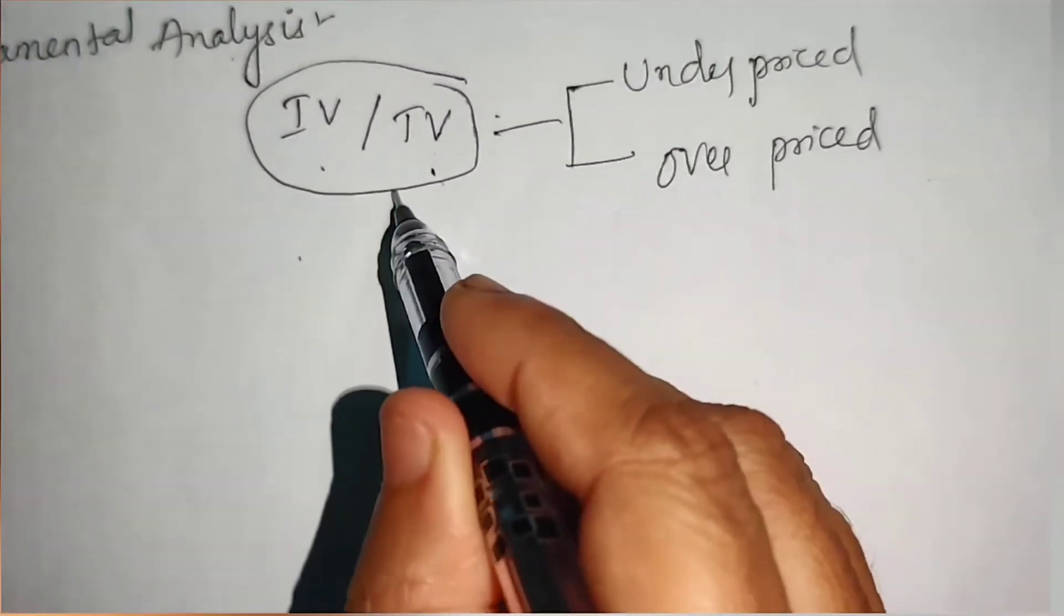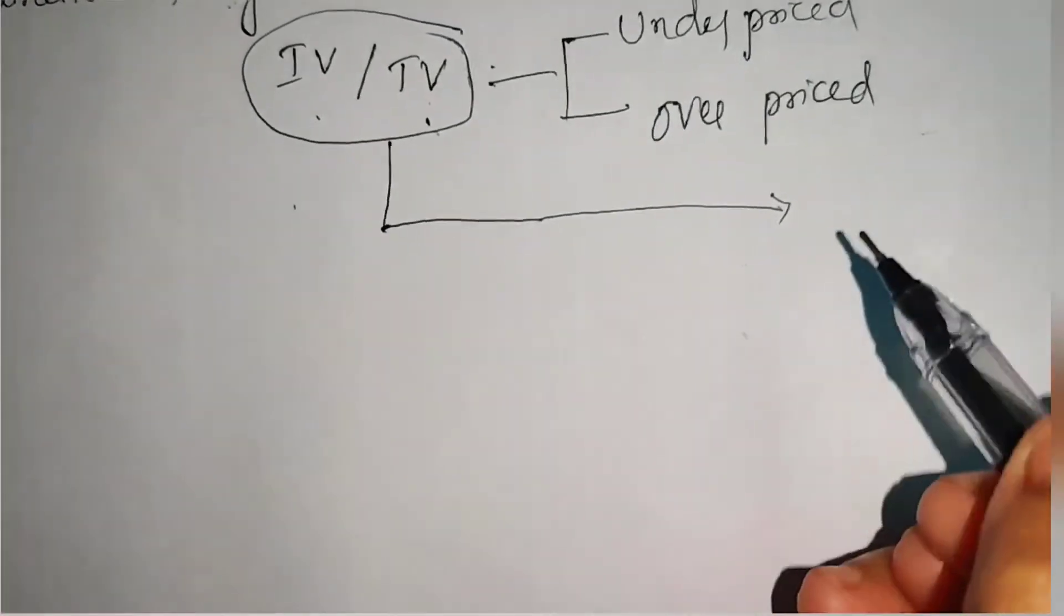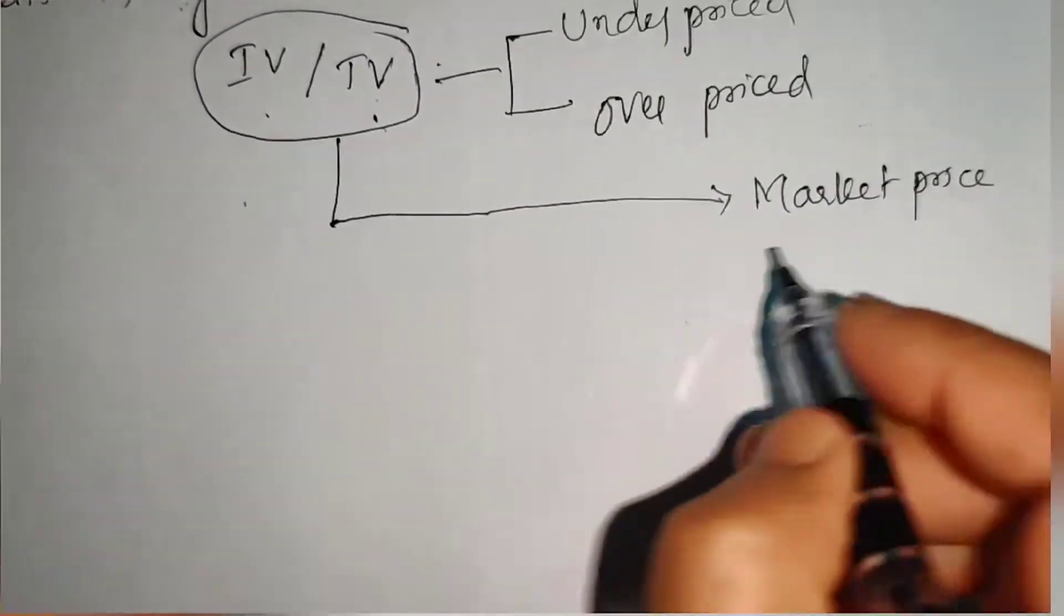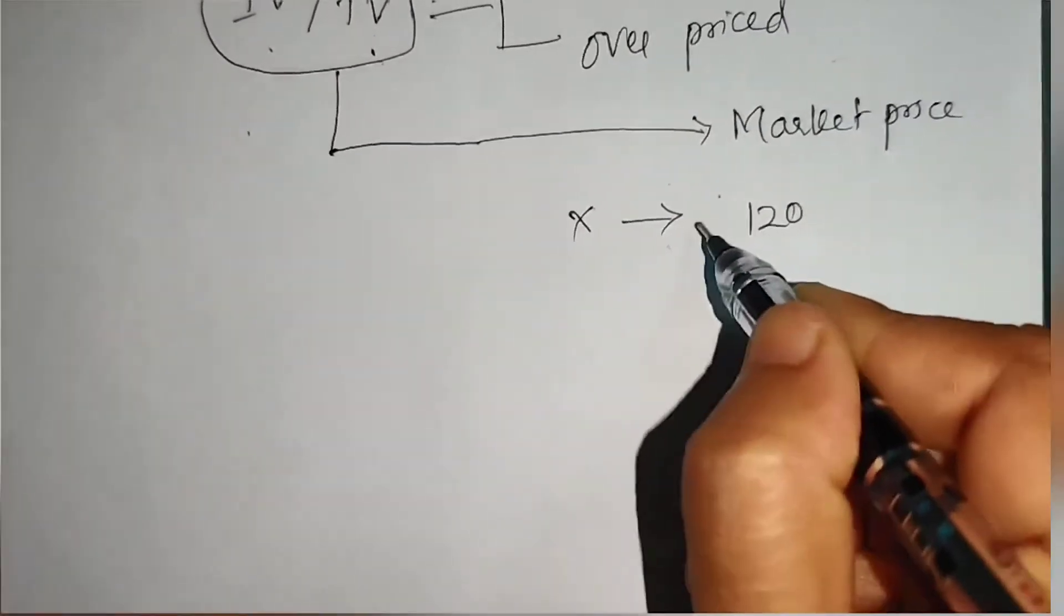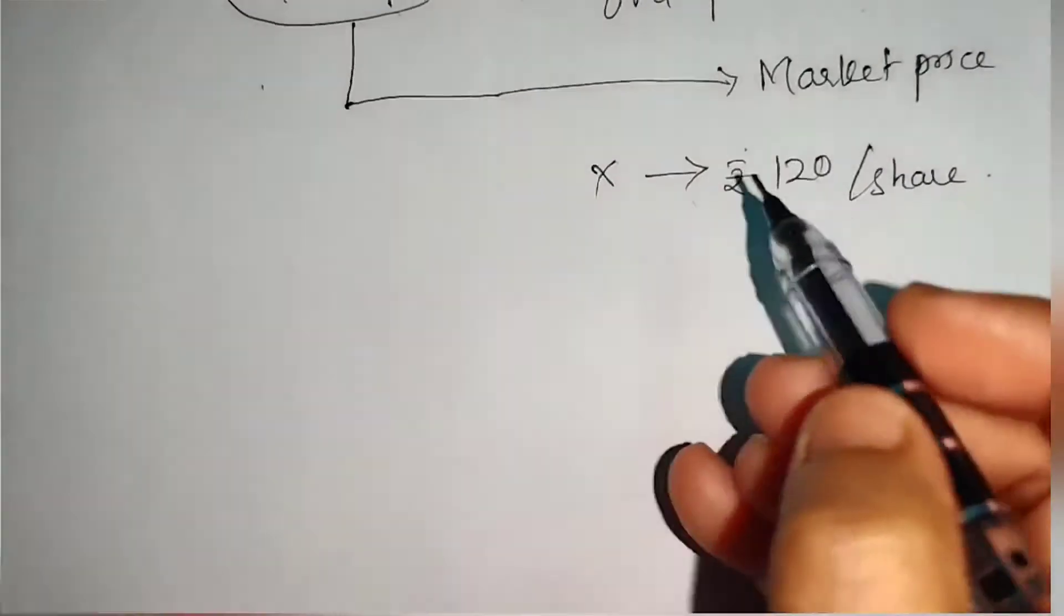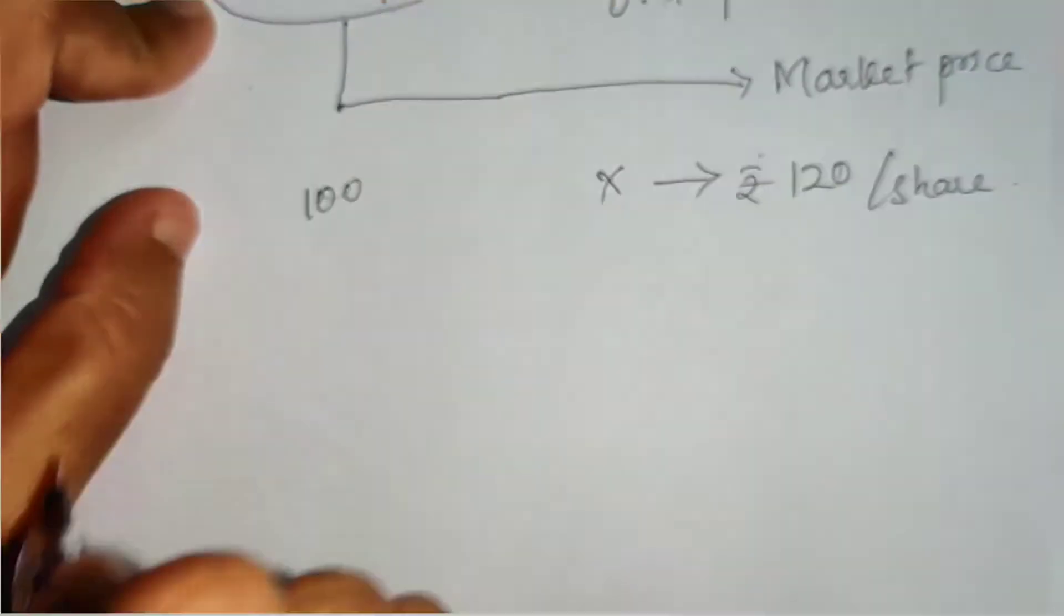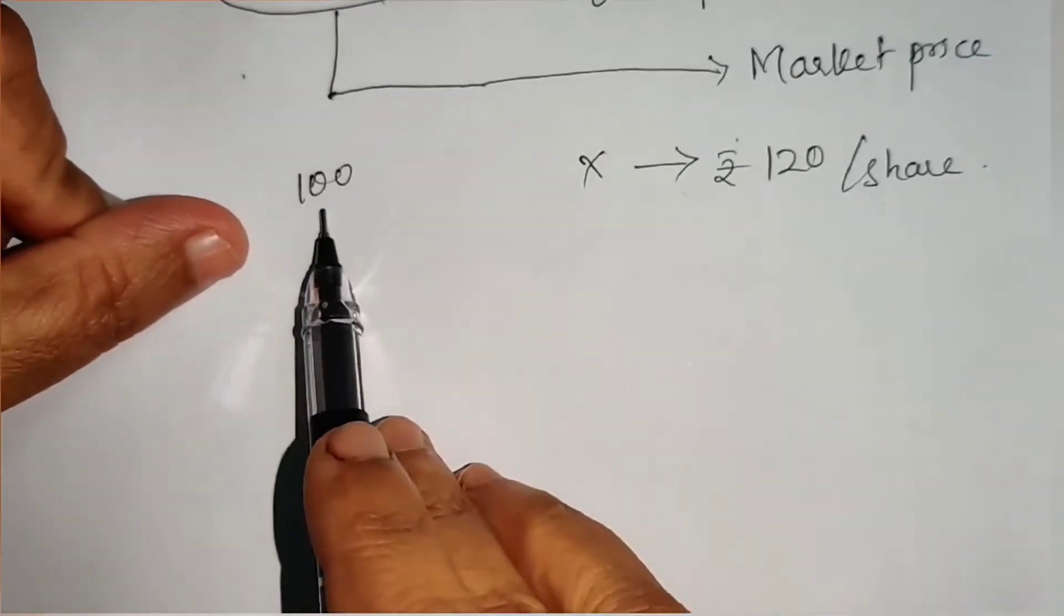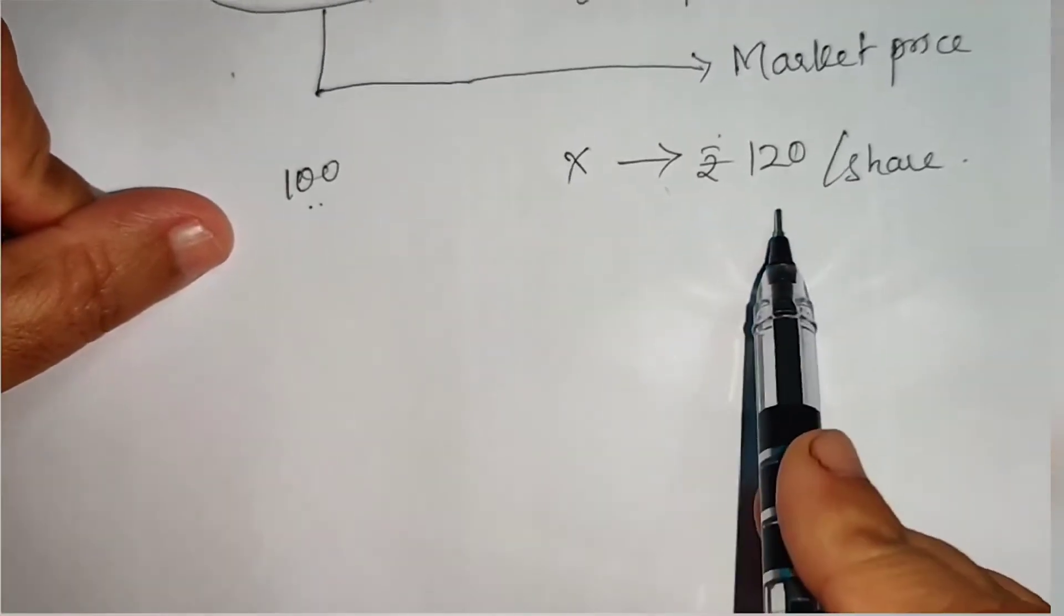After calculation of intrinsic value and true value, we need to compare it with the market price. Suppose some stock X is trading at a rate of 120 rupees per share, and according to our valuation if we got 100 rupees as its value, our valuation is saying that the true value of the share is 100 rupees but it is trading in the market at 120 rupees.